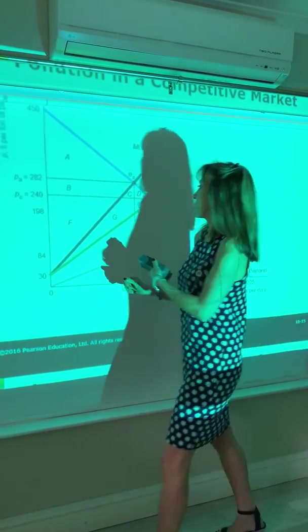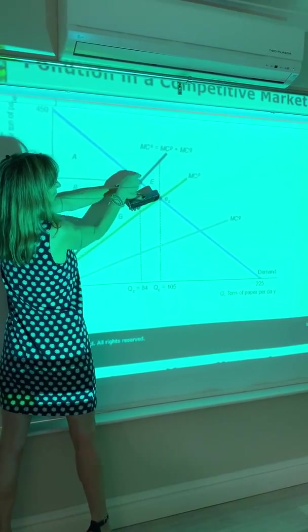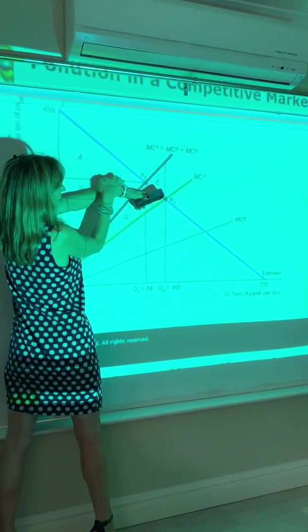What would consumer surplus be? It would simply be area A, the area below the demand curve and above the price line.